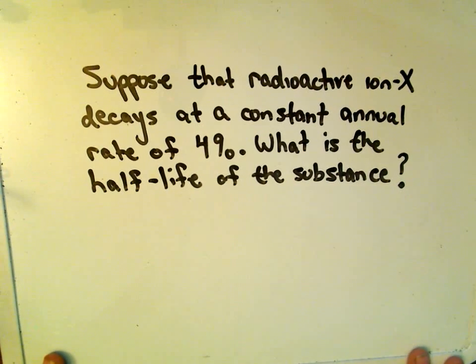So in this problem, suppose we have some radioactive ion, the mysterious radioactive ion X, and we know that this decays at a constant annual rate of 4%. We want to know what the half-life of the substance is.